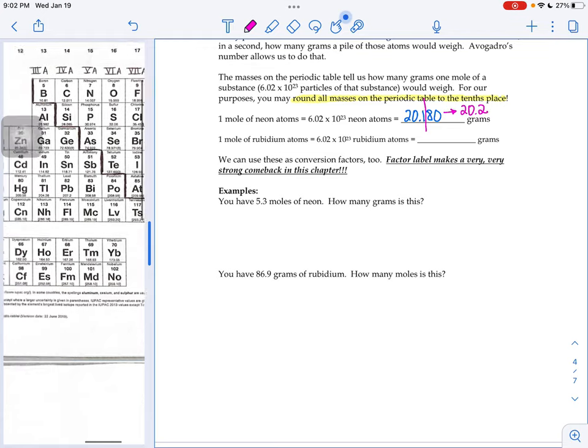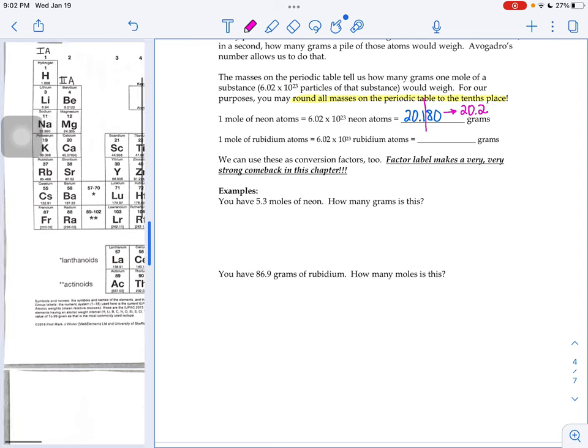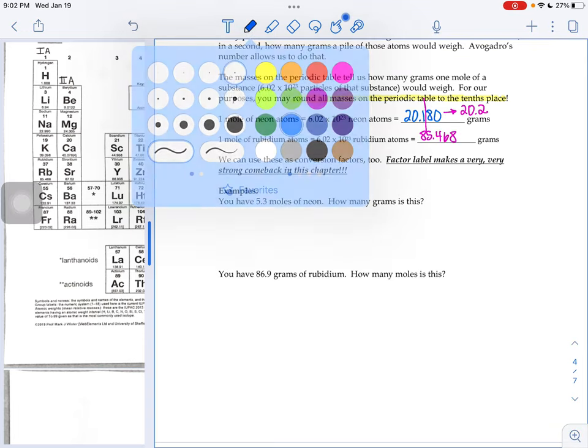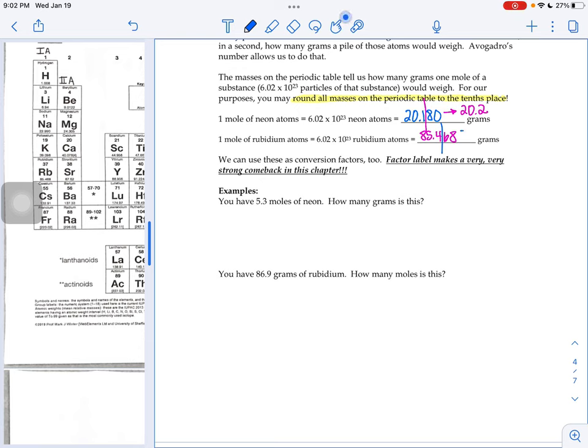If I had rubidium, I'd go over to rubidium on my periodic table, number 37, and I see 85.468. If I'm just going to keep a 10th place, I'd chop that in between the four and the six, and that would round to an 85.5.